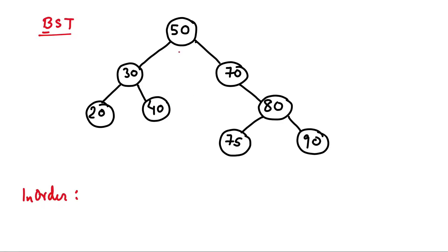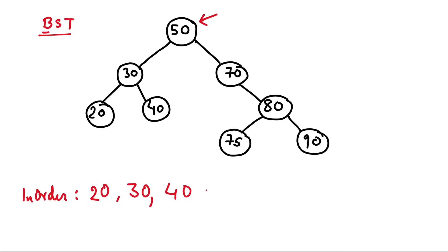If we call this function on root, it will recursively call on the left subtree. Node 30 will in turn call for 20. Node 20 has no left or right subtree, so it will print 20 and return to the calling function 30. Then it will print 30, then the right subtree, then return to 50, print 50, and similarly print 70, 75, 80, and 90.